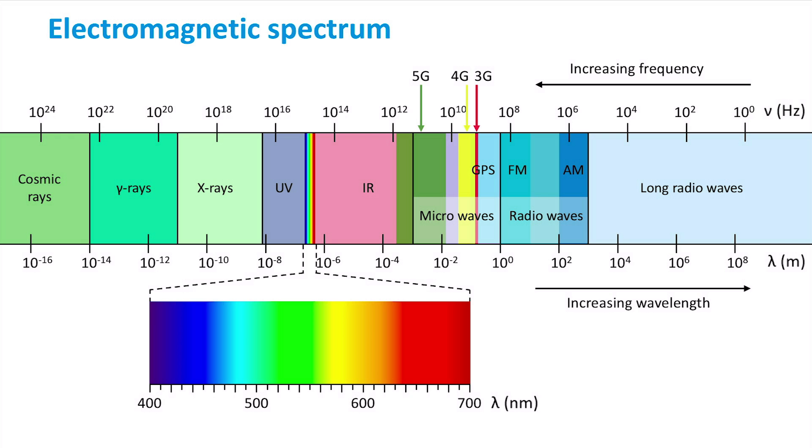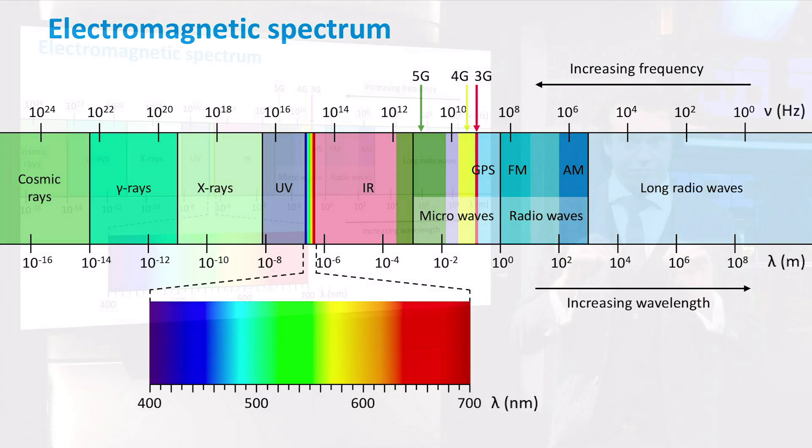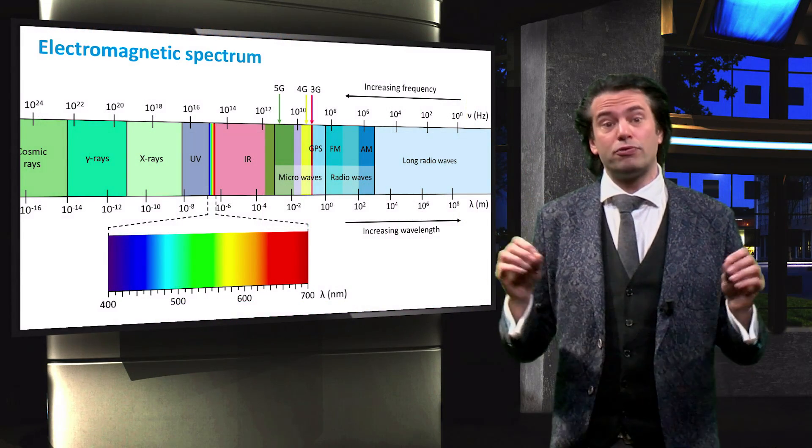In photovoltaics, we are mainly interested in ultraviolet, visible and infrared light, as we will see in a moment.